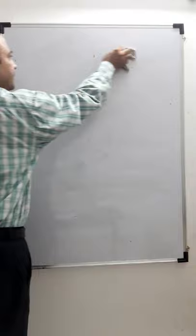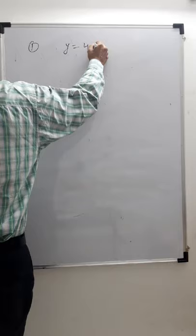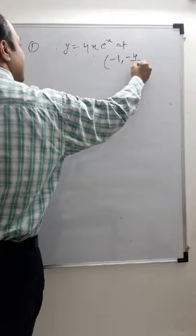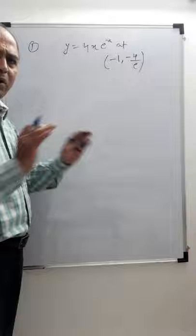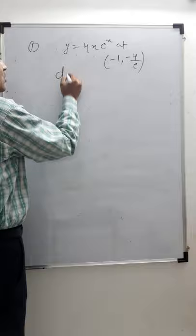Let's start with a couple of questions on tangent and normal. The first question: find the equation of the tangent to the curve y = 4xe^x at the point (−1, −4/e). We have to find the equation of tangent at this point. No need to draw the graph — straight away, we will start differentiating. So dy/dx...